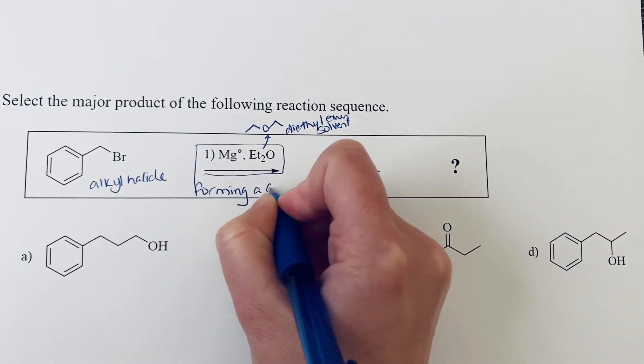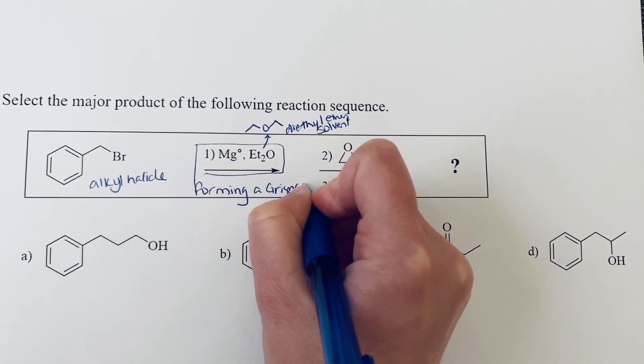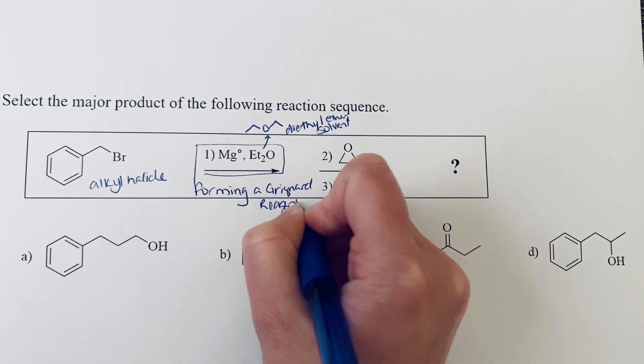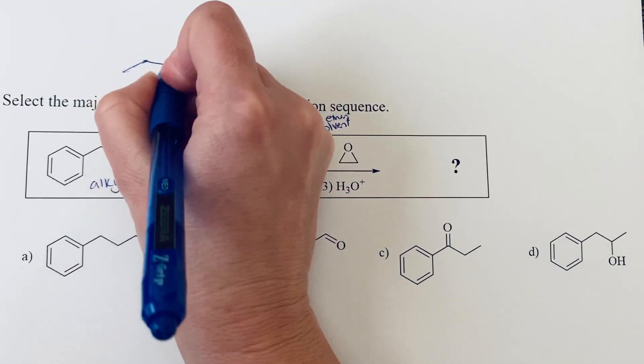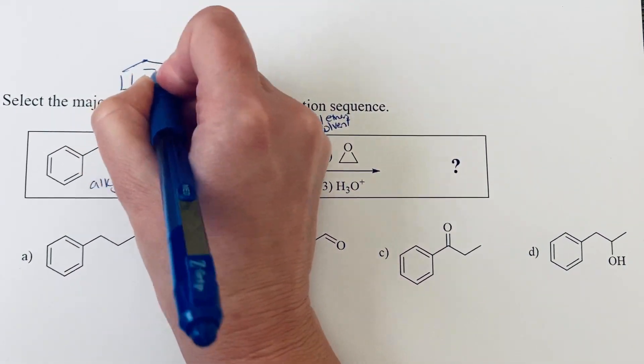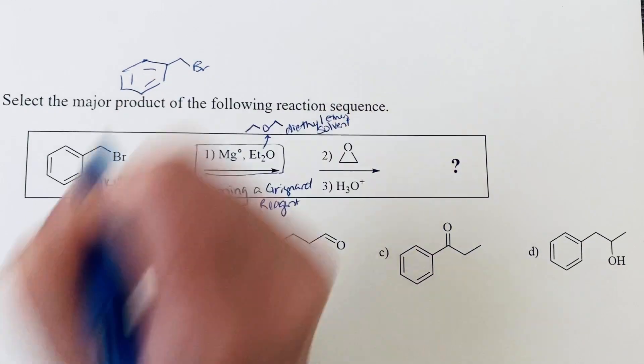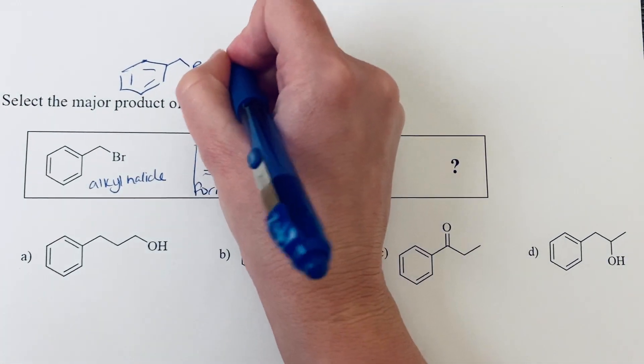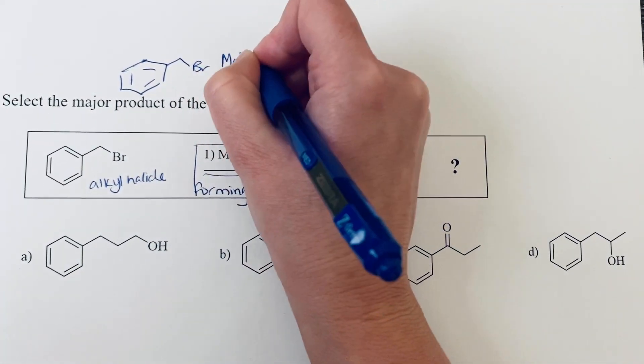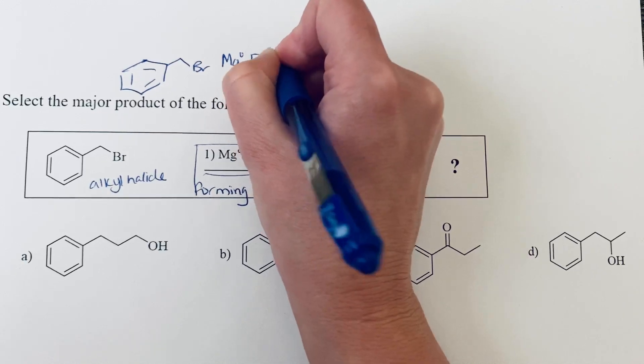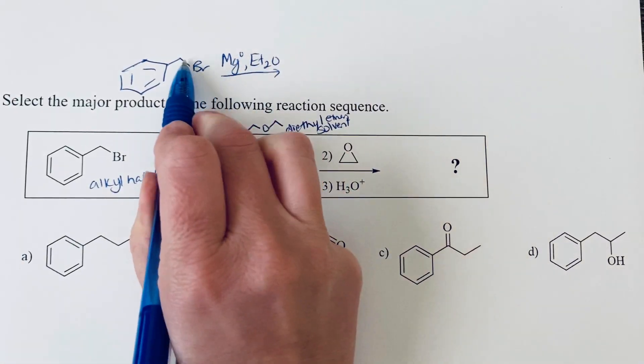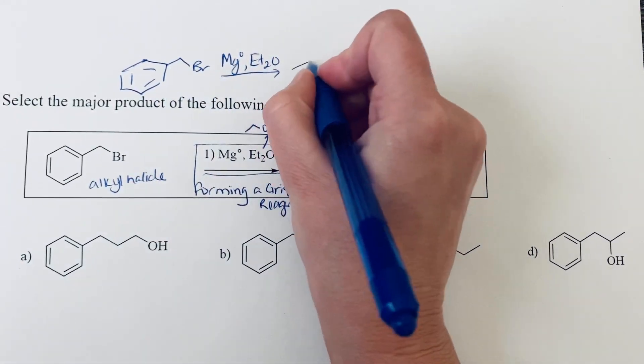So you are forming a Grignard reagent with this first step. We're starting with that benzyl bromide, treating it with magnesium metal in diethyl ether solvent, and so that magnesium is inserting between the carbon-bromine bond.